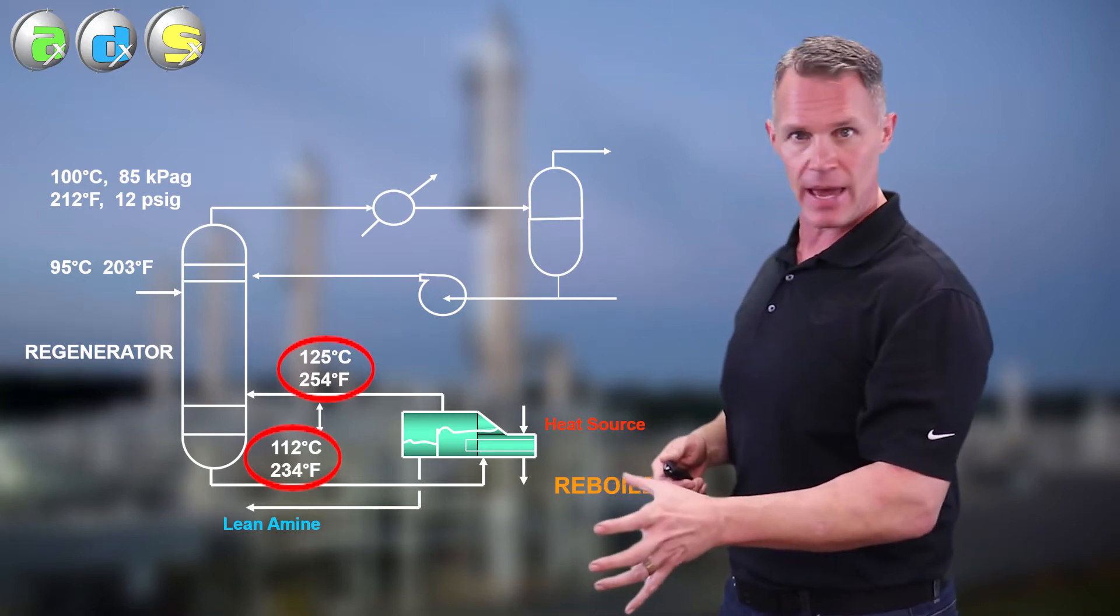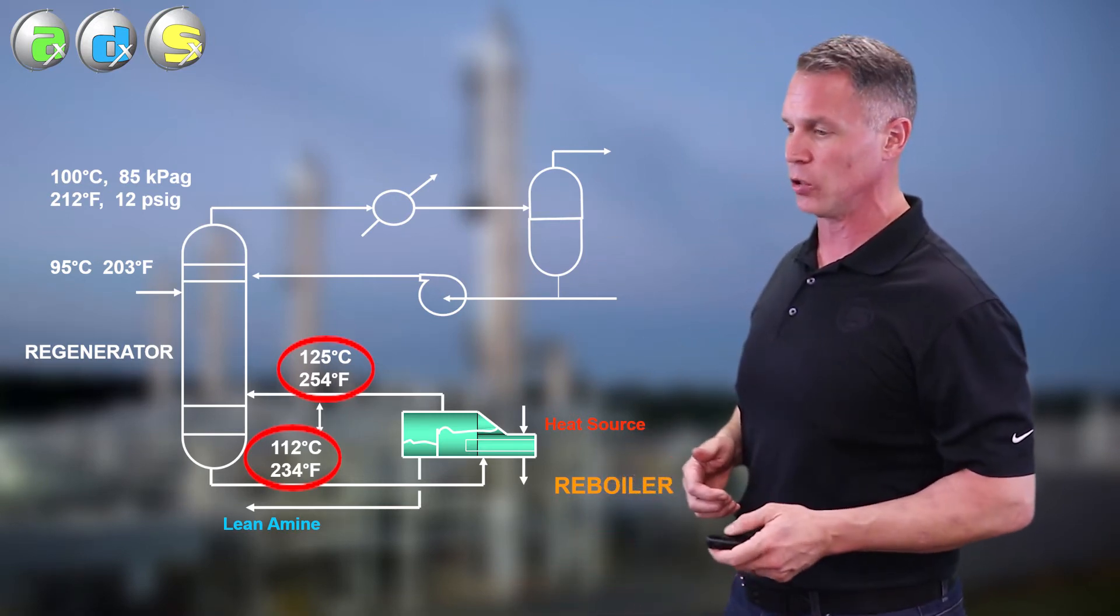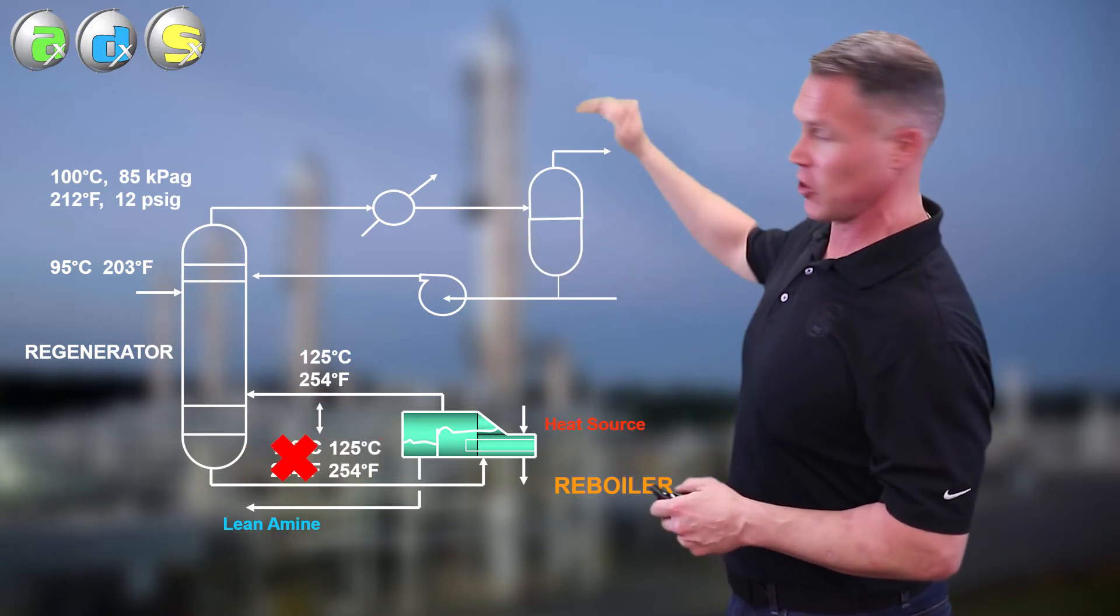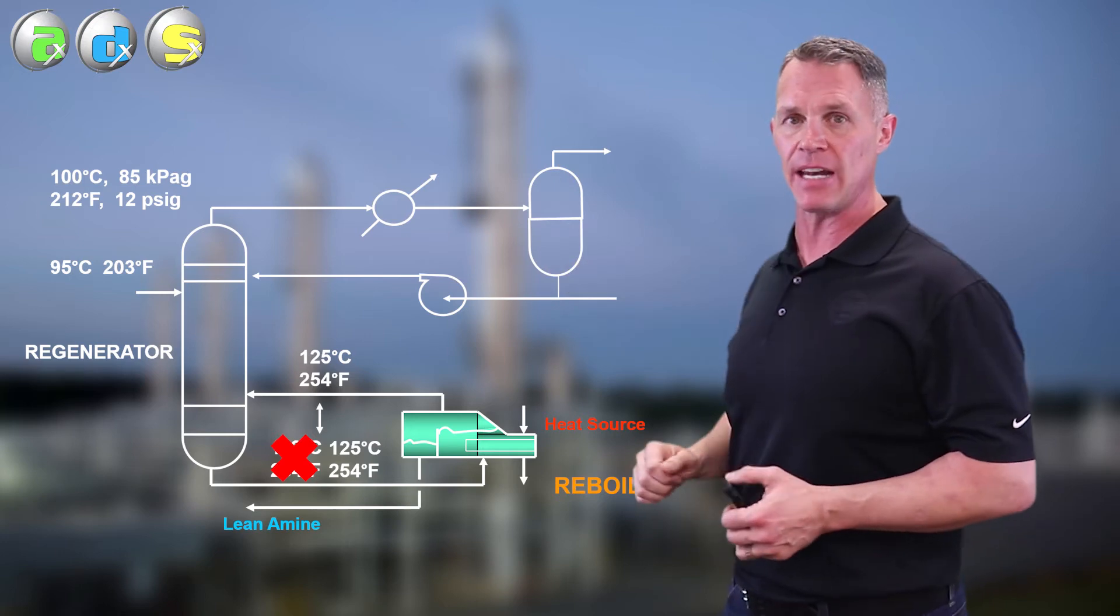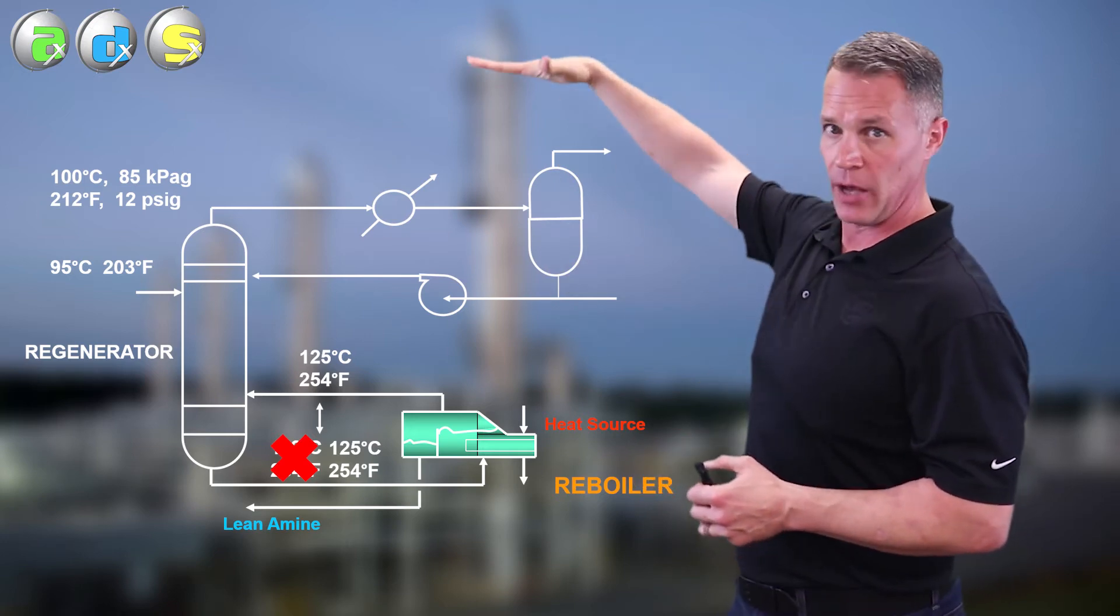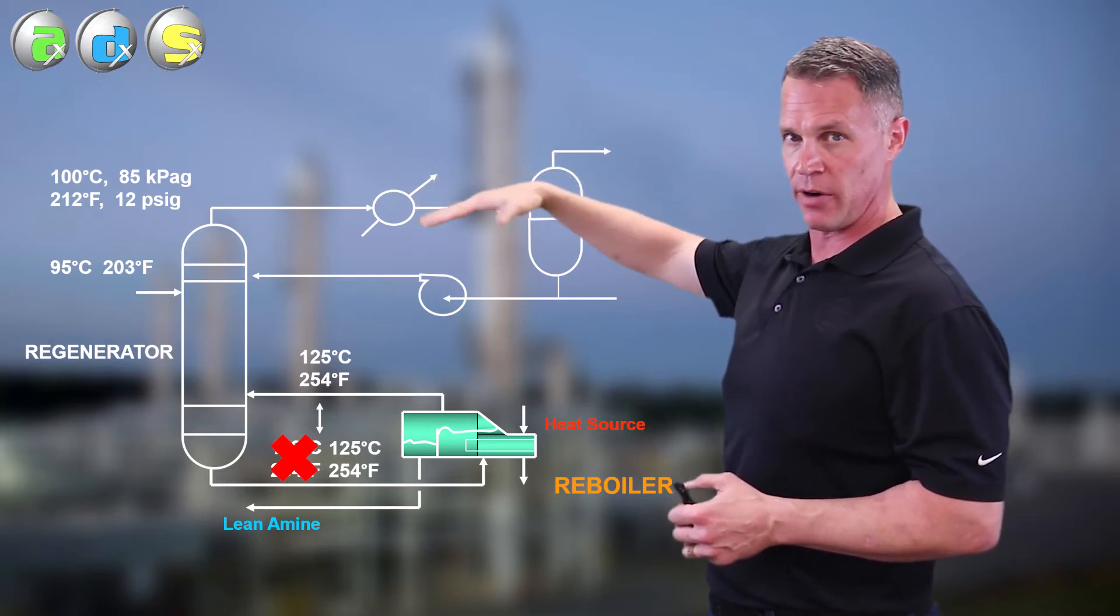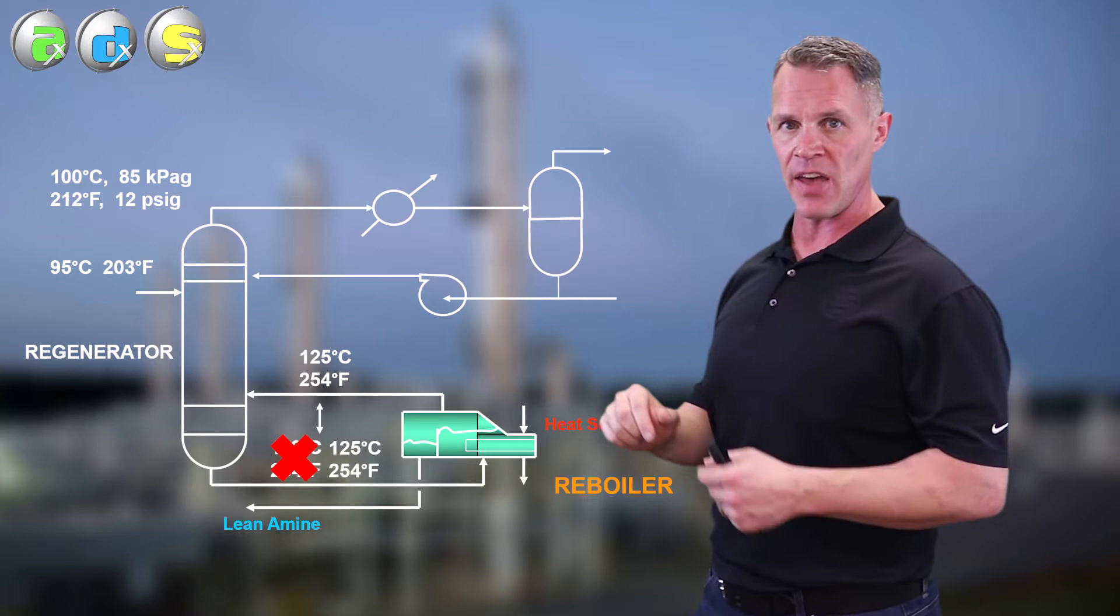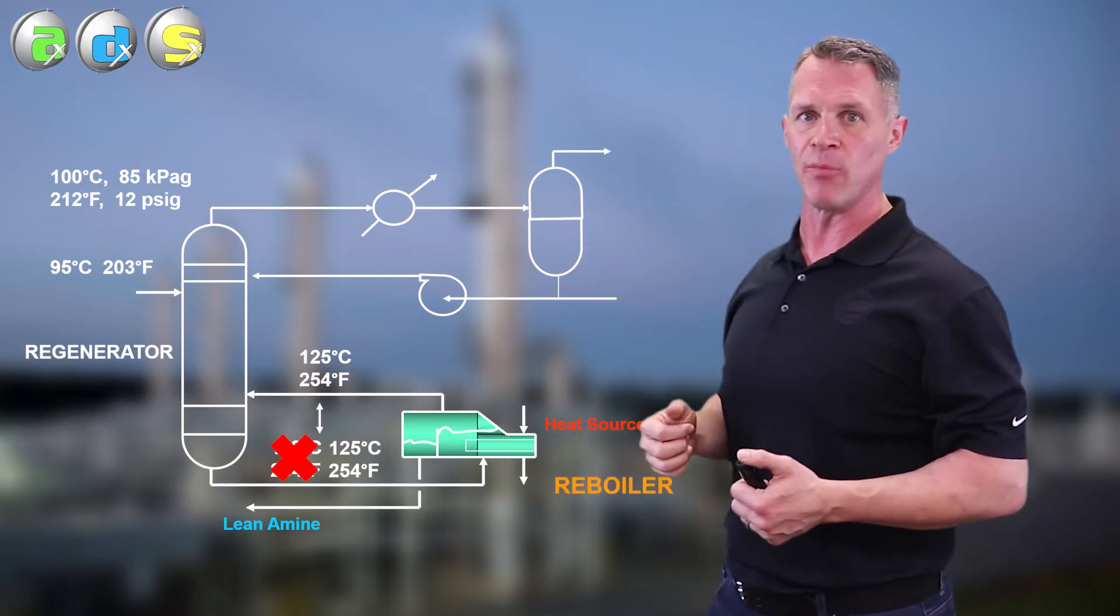In the regenerator, the amine never got heated up the way it was supposed to. So you don't want that. Instead, what you want is this - where the temperatures are about the same in and out of the reboiler. Means the amine, as it flows down those trays or packing of the regenerator, became very, very close to its boiling point. And then we pushed it over the edge in the reboiler itself.